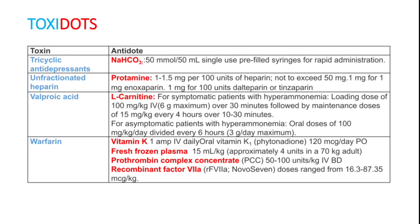For unfractionated heparin, protamine is the drug of choice — 1.5 mg per 100 units of heparin should be given. Valproic acid is an anti-epileptic drug; whenever there is toxicity, use L-carnitine — dose 100 mg per kg body weight IV over 30 minutes.